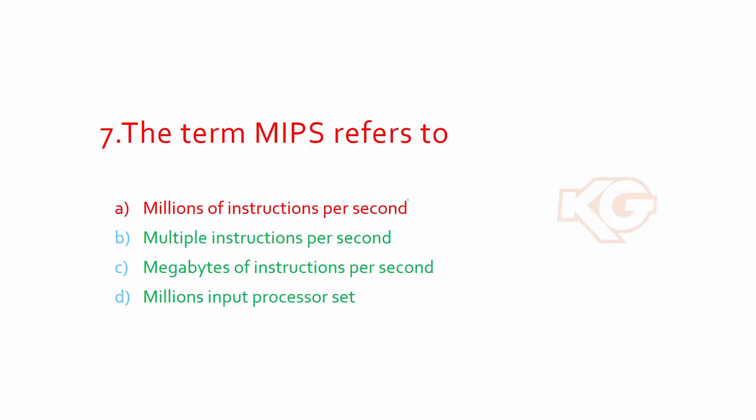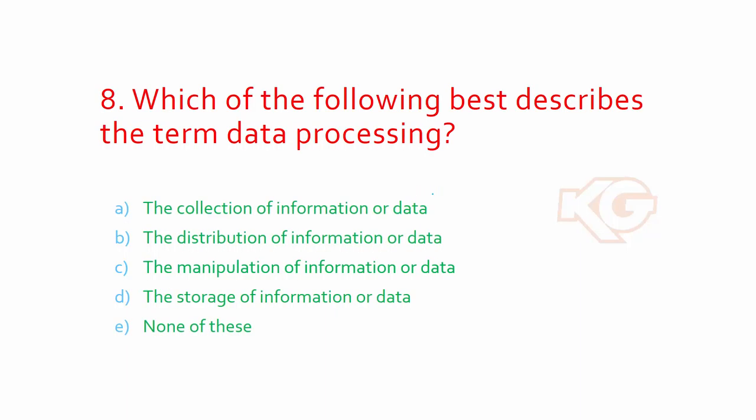Which of the following best describes the term data processing? You need to carefully read all the options. The collection of information or data, the distribution of information or data, the manipulation of information or data. So option C is the most suitable.